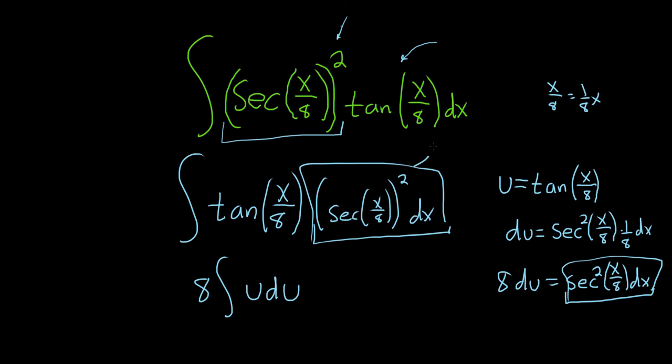All right. So this piece here was 8 du. And the tangent was u. So everything looks okay. Using the power rule, there's a 1 here. So we'll add 1 to that. So it will be u to the 2. Then you divide by that. So over 2 plus capital C.